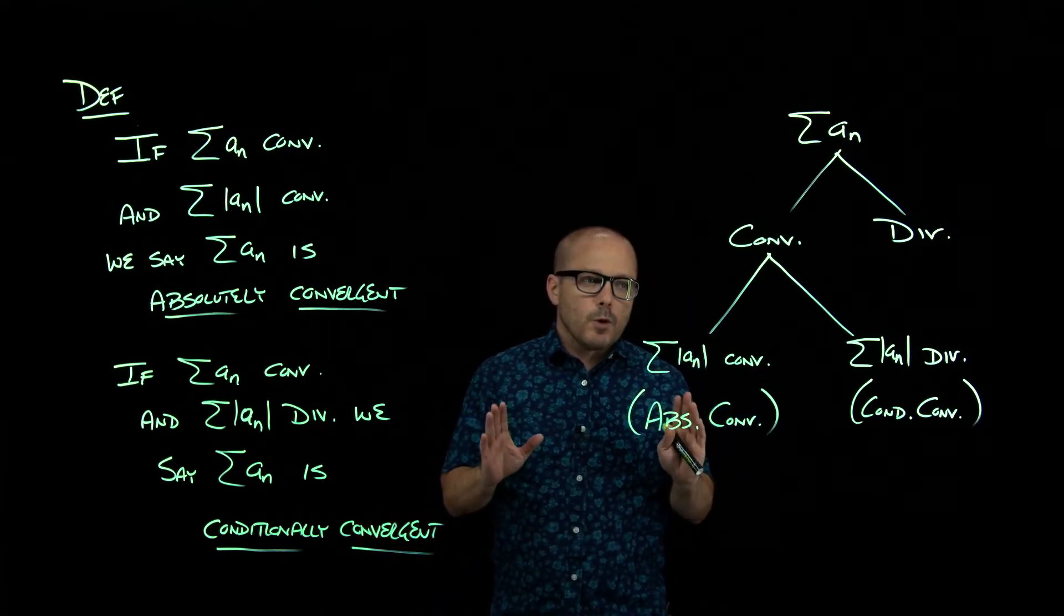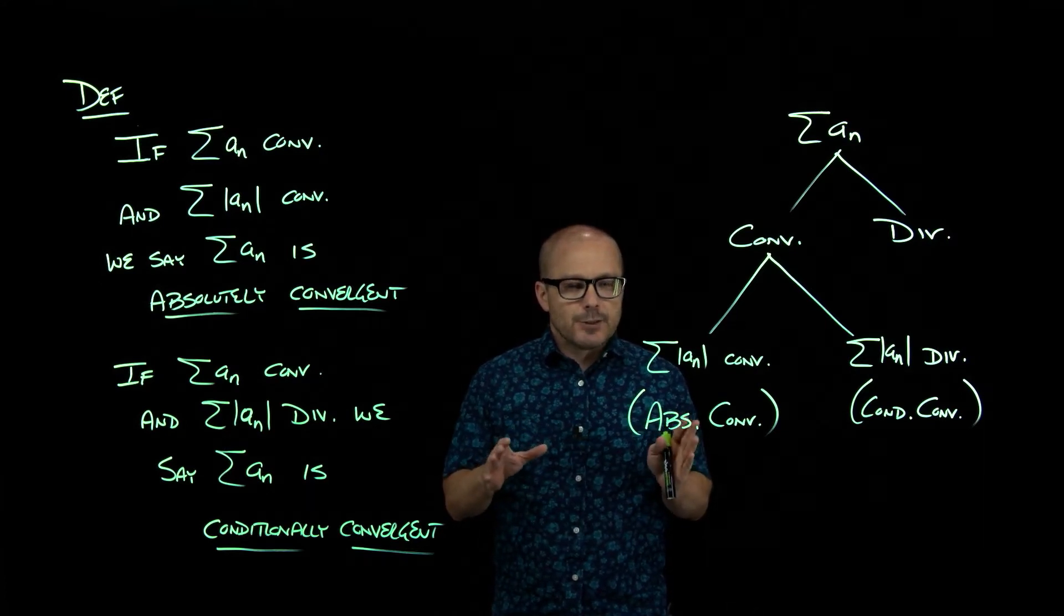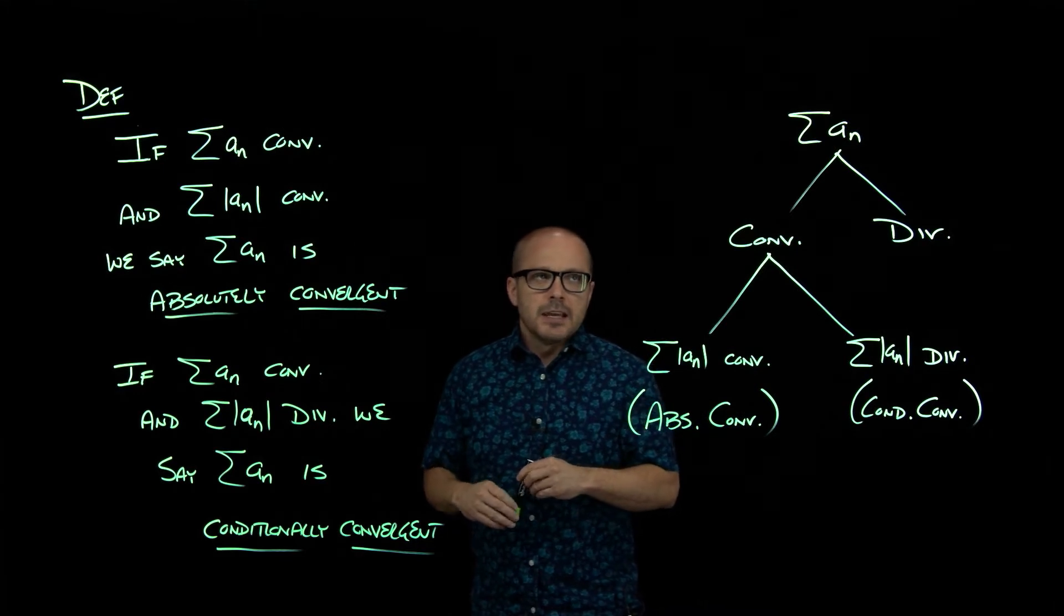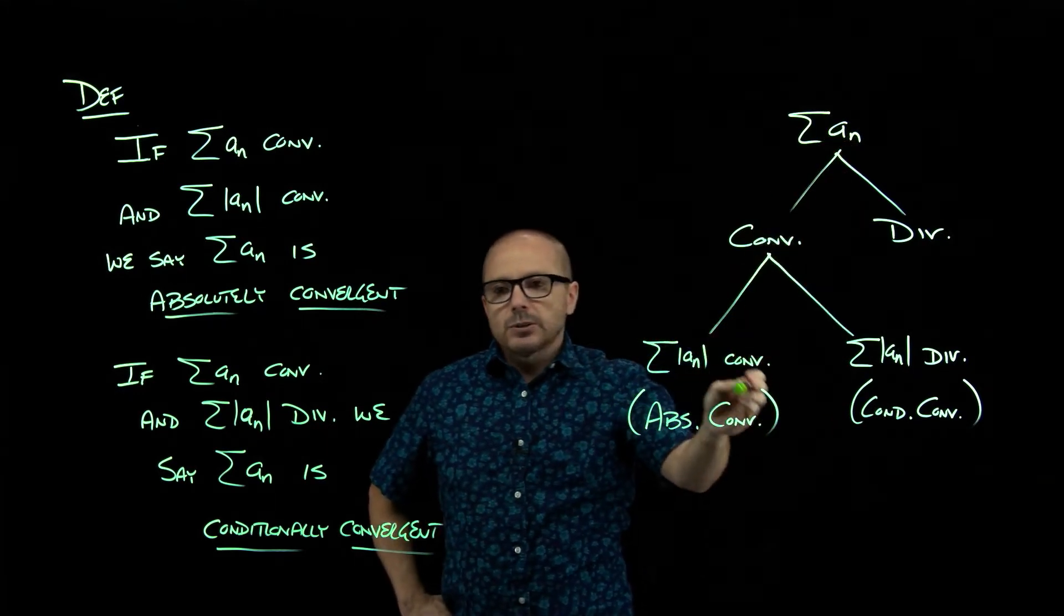But a more interesting thing that we really don't use directly, but as highlights the difference between infinite sums and finite sums, it turns out that if a series is absolutely convergent, then if you add that up in some random order or however you want to rearrange the terms, it'll always add up to the same thing.